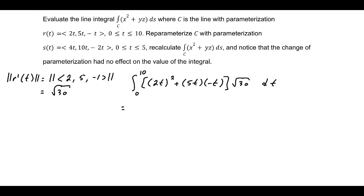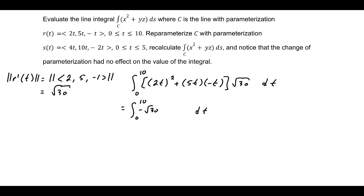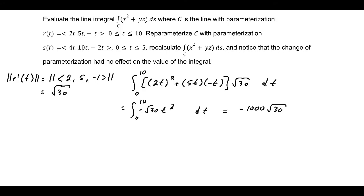This isn't too complicated. This becomes the integral from 0 to 10 with respect to t of negative square root of 30 times t squared, which evaluates to negative 1,000 times the square root of 30, all divided by 3.